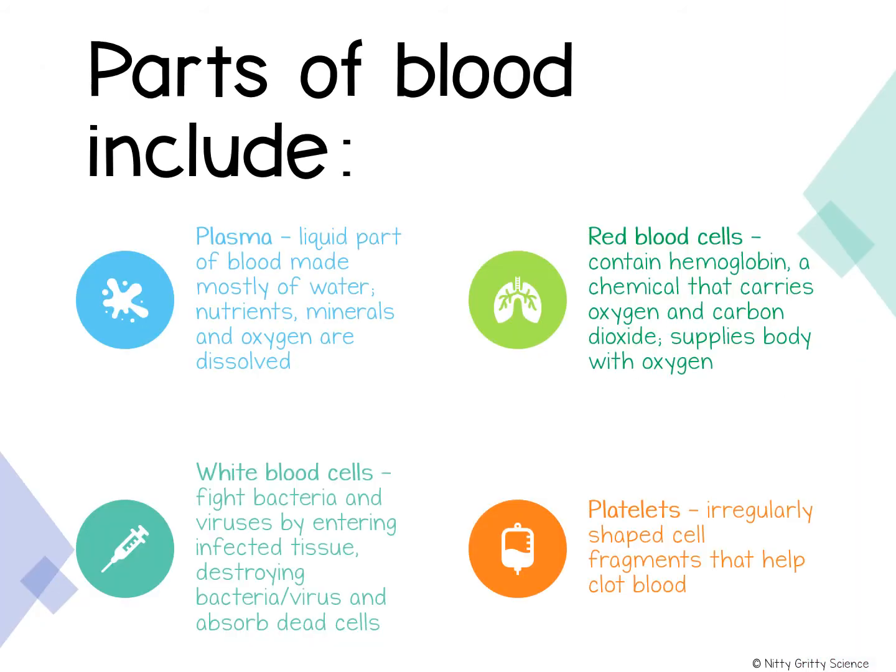Blood is actually a complex tissue. It has several parts and is made up of four different components: plasma, red blood cells, white blood cells, and platelets.